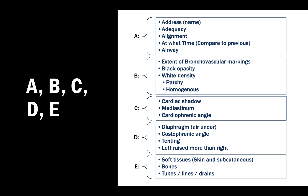D - have a look at the diaphragm. Look at the air on the diaphragm, the costophrenic angle - is it obliterated or normal? Is there any tenting? If the left side is raised more than the right, that might indicate diaphragmatic injury or hernia in trauma cases. Look for any herniating organ in trauma, or hiatus hernia through the diaphragm.